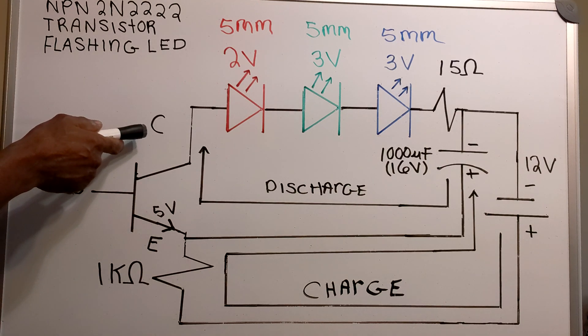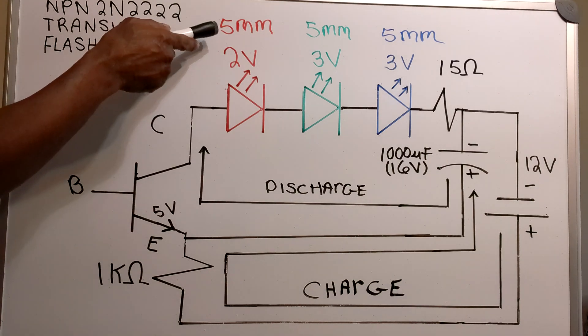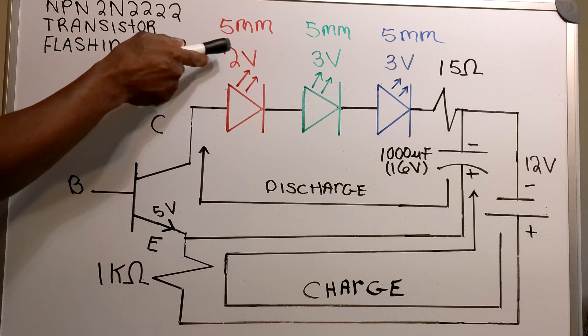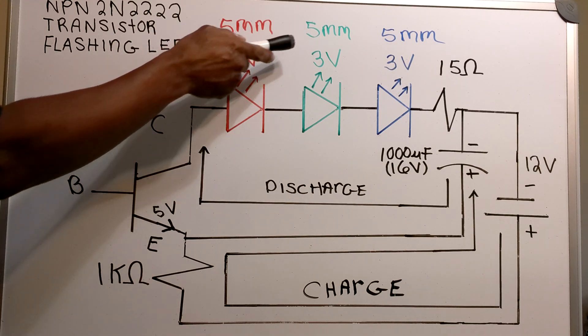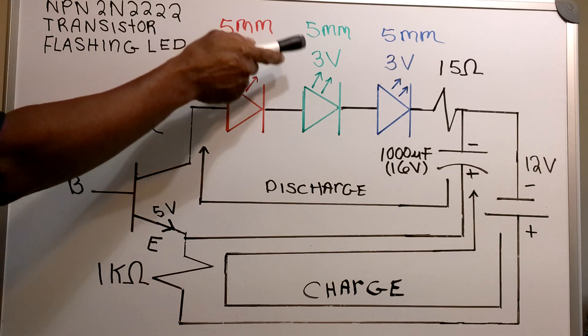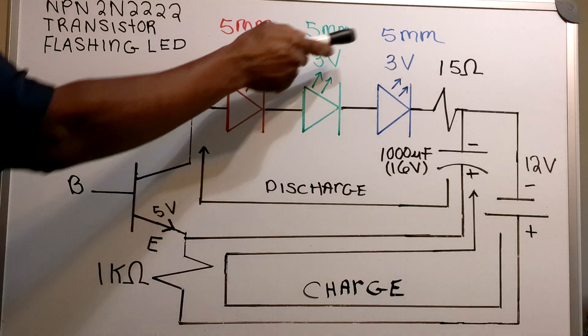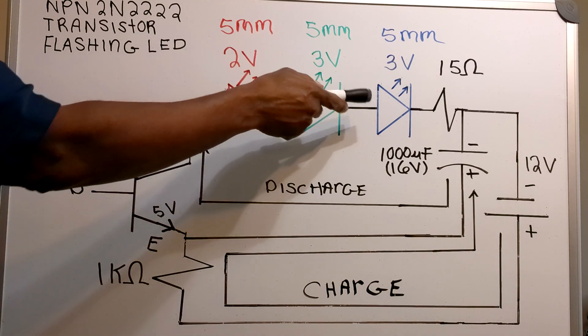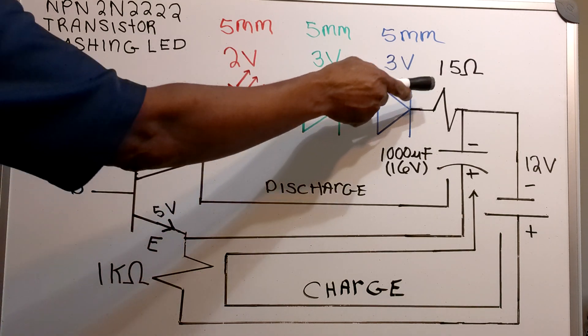On the collector side, I have a 5mm 2V red LED, a 5mm 3V green LED, and a 5mm 3V blue LED in series with a 15 ohm resistor.